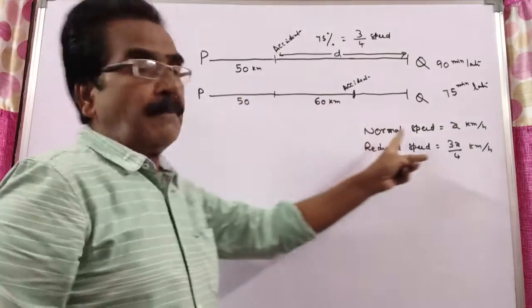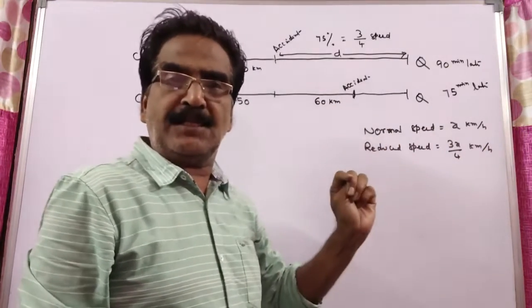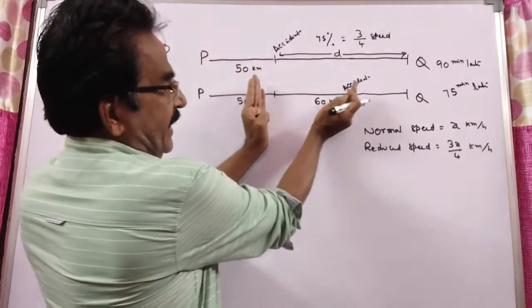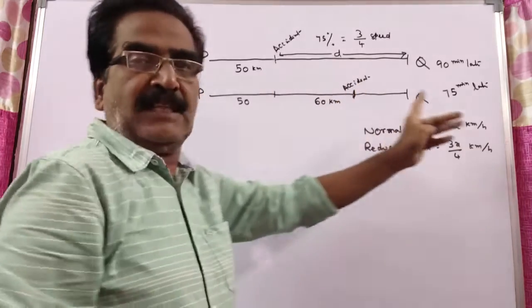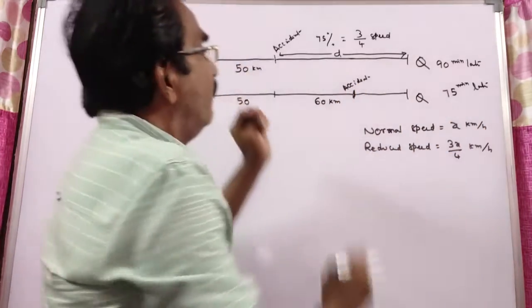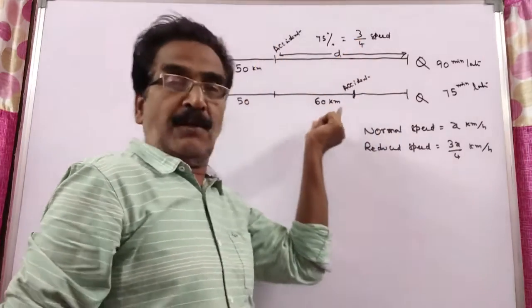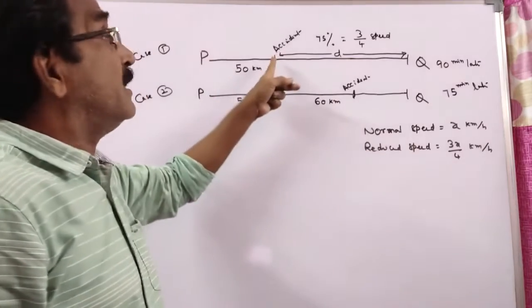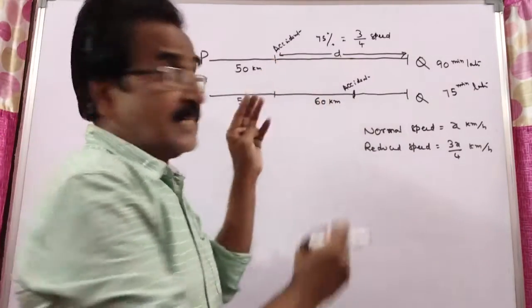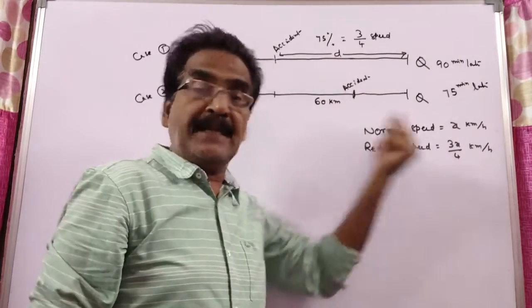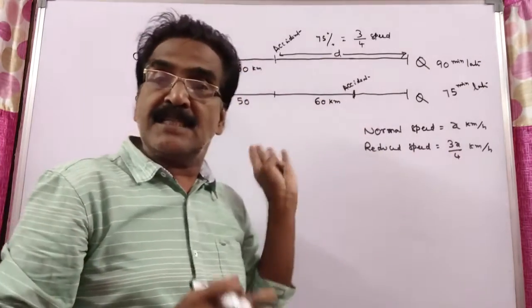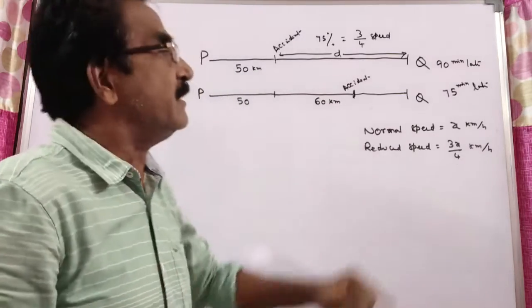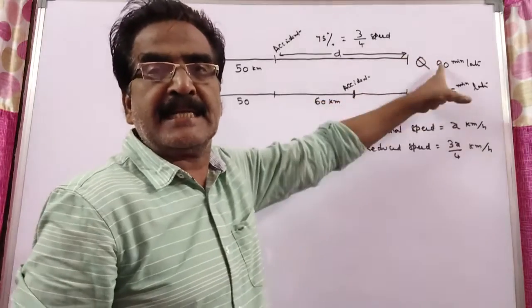Let the normal speed of the train be X kmph and reduced speed be 3X/4 kmph. In the second case, this 60 kilometers is travelled with normal speed, whereas in the first case, this 60 kilometers is travelled with reduced speed because the accident occurred there. So the difference between these two timings is 15 minutes.